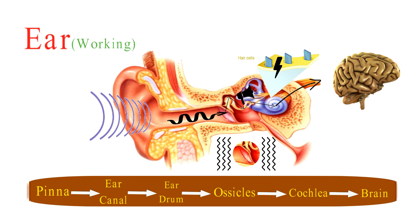Inside the brain, a remarkable orchestra of neurons takes over. These neurons process the electrical signals, turning them into the symphony of sounds we hear every day. And there you have it — the basic structure and workings of our ears. They not only allow us to enjoy music, engage in conversations, and appreciate the sounds of nature, but they also help us maintain our balance.